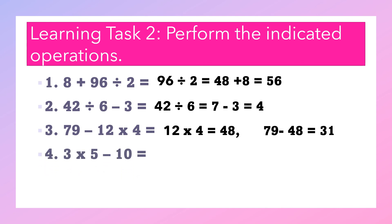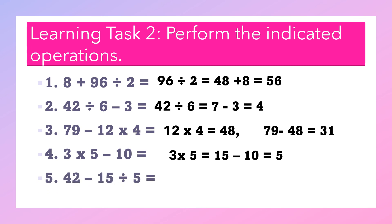Number four: 3 times 5 minus 10. MDAS rule: 3 times 5 equals 15; 15 minus 10 equals 5. Number five: 42 minus 15 divided by 5. Division comes first: 15 divided by 5 equals 3; then 42 minus 3 equals 39.